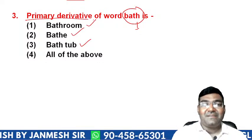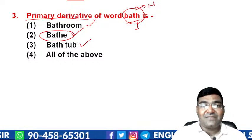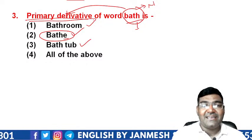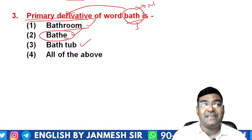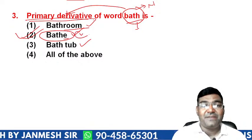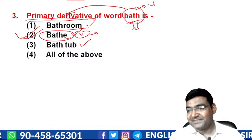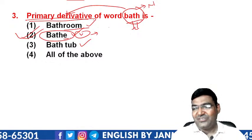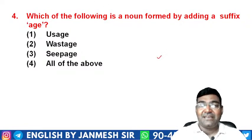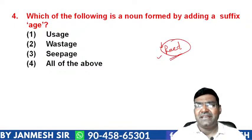Moving on: which of the following is a noun formed by adding the suffix '-age'? The options are 'usage', 'wastage', 'seepage', or all of the above. 'Use' plus '-age' gives 'usage', 'waste' plus '-age' gives 'wastage', and 'seep' plus '-age' gives 'seepage'. So all three words are formed by adding '-age' as a suffix. The answer is D — all of the above.